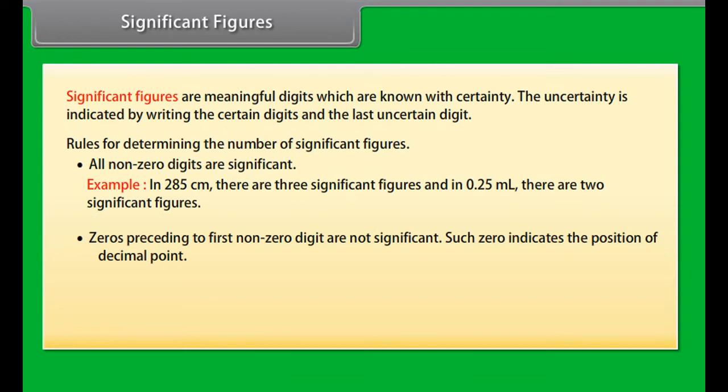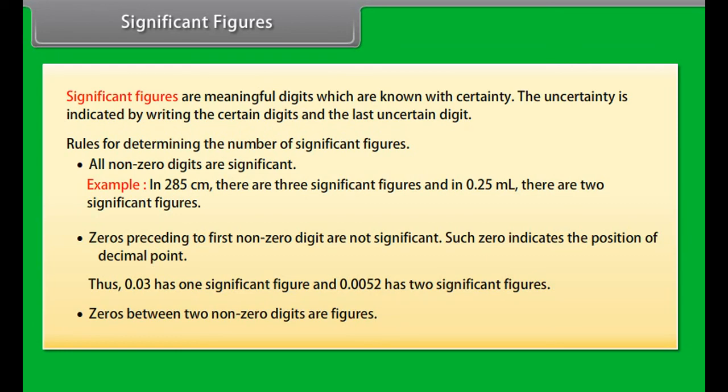SI unit of density equals SI unit of mass upon SI unit of volume, which equals kg·m^-3 or g·cm^-3.